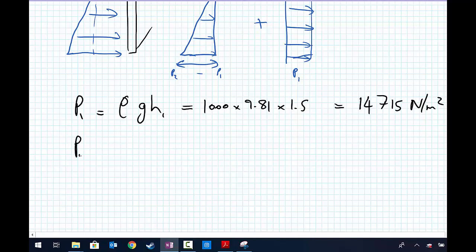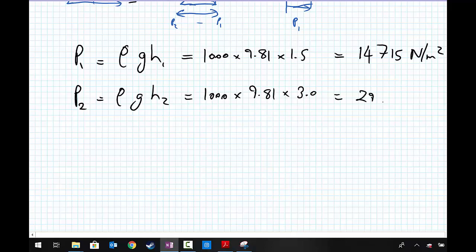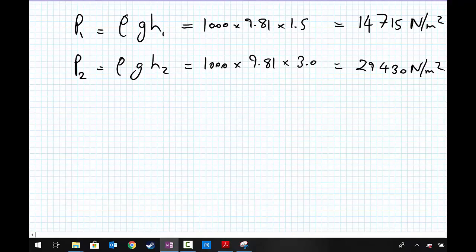Likewise, P2 equals rho G H2, which equals 1,000 times 9.81 multiplied by 3, which equals 29,430 newtons per meter squared. One of the other quantities we'd like to know: the area of the plate equals 1.5 meters high multiplied by 1.5 meters width, which equals 2.25 meters squared.